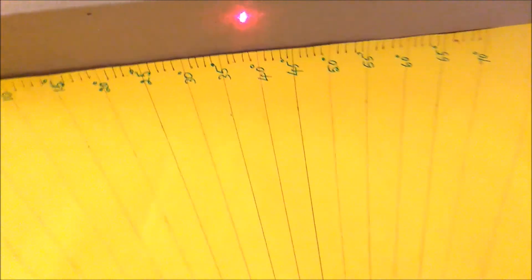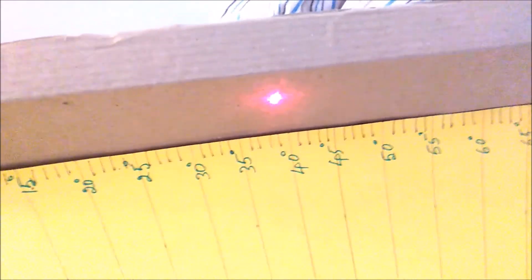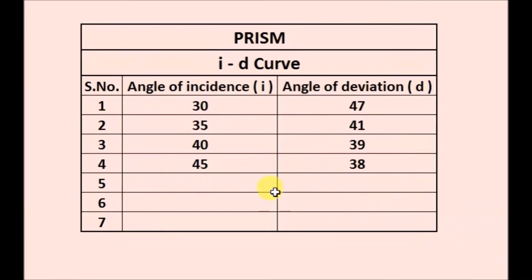For an angle of incidence of 50 degrees, the angle of deviation is 39 degrees.